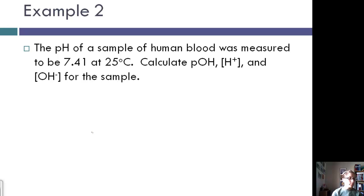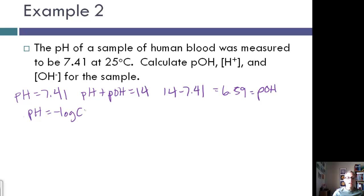Let's look at another example. pH of a sample of human blood was measured to be 7.41 at 25 Celsius. Since I know that the pH is equal to 7.41 and I know that pH plus pOH equals 14, I can take 14 minus 7.41 and get 6.59 as my pOH. Now to find the concentration of H plus and OH minus, I know pH is equal to negative log of H plus. So 7.41 equals negative log of H plus. Let's get rid of the negative: negative 7.41 equals log of H plus.